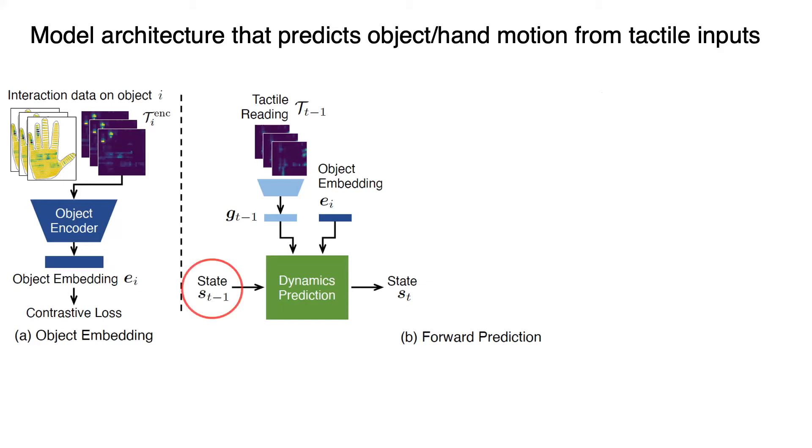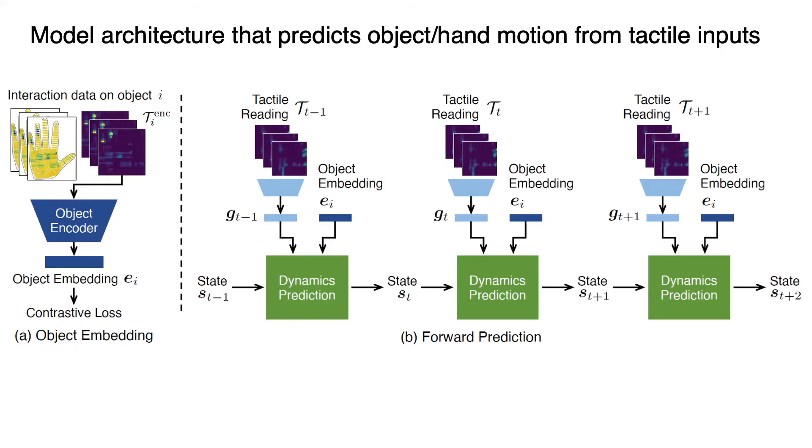The second part of our model aims to model the dynamics, which takes the previous states at t-1, represented as the positions and velocities of the object and the hands, the tactile embedding GT, and the object embedding EI as inputs, and then predicts the system states at the next time step. We can iterate the process for multiple steps by feeding the model's prediction back to enable long-term future prediction. The model is supervised by minimizing the pinball loss between the predicted state and the ground truth state obtained using the vision model, which also allows our model to perform uncertainty estimation and predict the 10% and 90% quantiles.